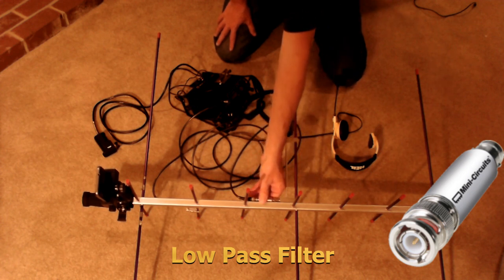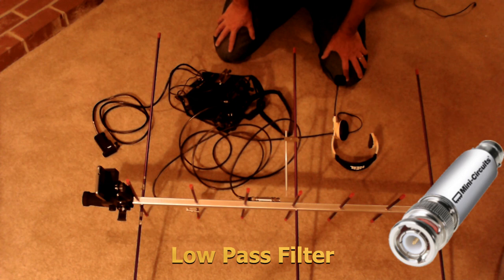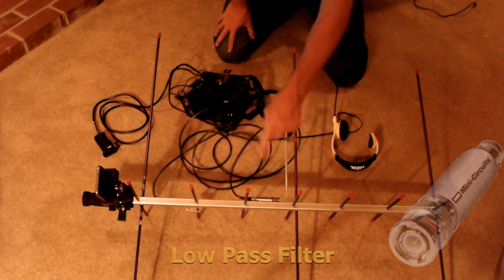The filter ensures that when you uplink on VHF and transmit, it won't interfere on the UHF side. An example is FO-29. You'd uplink on VHF and listen on UHF, so it's important to have that.